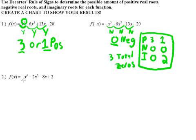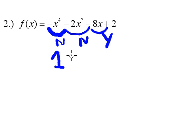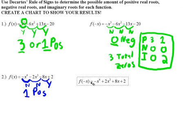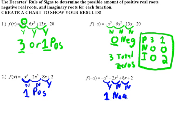Moving to the next example, let's count sign changes for f(x). It starts negative to negative — no change; negative to negative — no change; negative to positive — yes. So there is exactly one positive zero. Then for f of negative x, only the odd degree terms change signs: the negative two x cubed changed to positive, and the negative eight x changed to positive. Counting sign changes: negative to positive — yes; positive to positive — no; positive to positive — no. So there is exactly one negative zero.